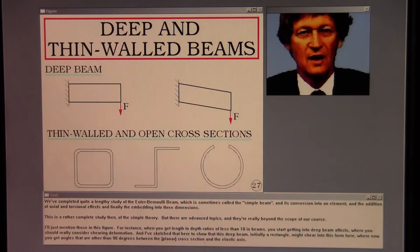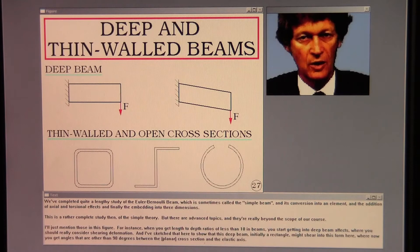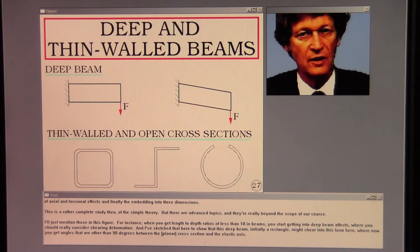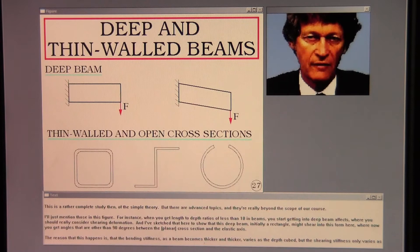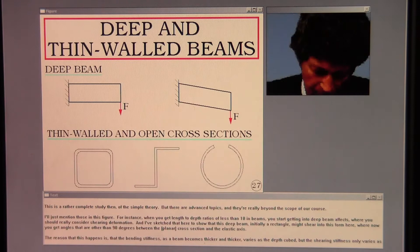We've completed quite a lengthy study of the Euler-Bernoulli beam which is sometimes called the simple beam and its conversion into an element and the addition of axial and torsional effects and finally the embedding into three dimensions. This is a rather complete study then of the simple theory. But there are advanced topics and they're really beyond the scope of our course. I'll just mention those in this figure.